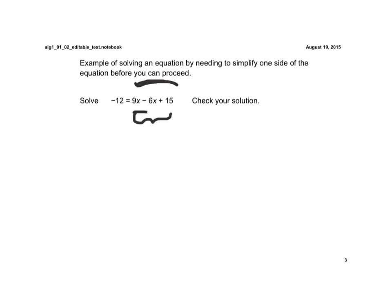So the like terms are the 2x terms that we have here, 9x minus 6x. And we're just subtracting those, 9x minus 6x is 3x plus 15. And on the left side, we still just have a negative 12.